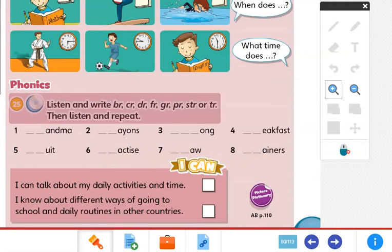I can hear all of you, mashallah, give correct answers. Here, gr for grandma, cr for crayons, str for strong, br for breakfast, fr for fruit, pr for practice, dr for draw, and tr for trainers.